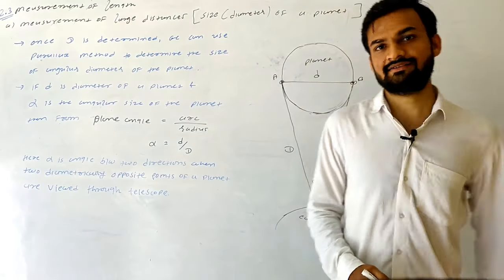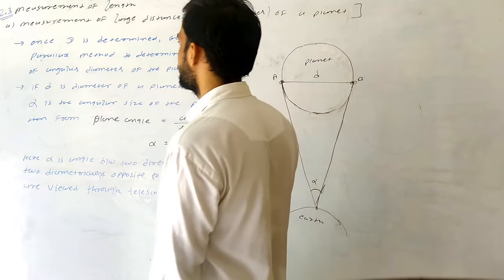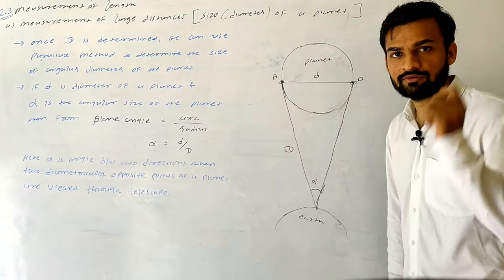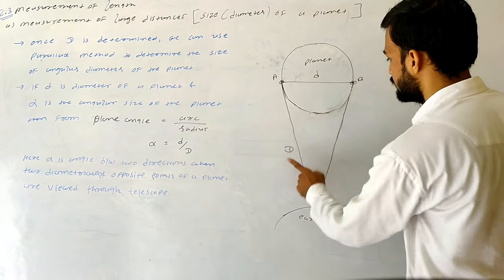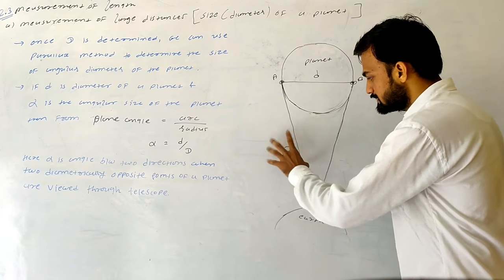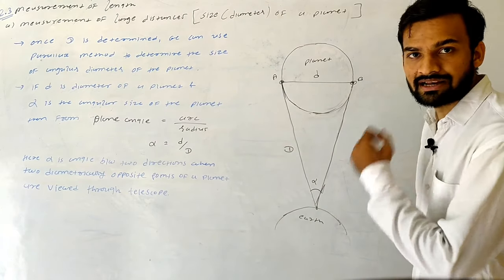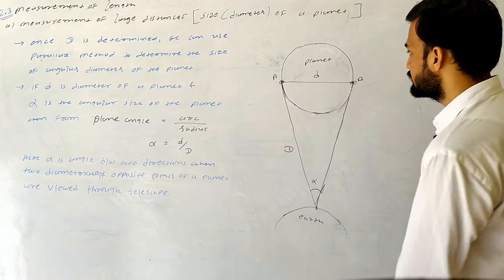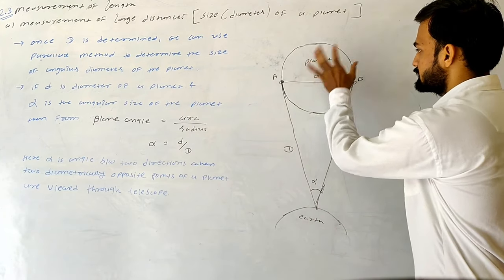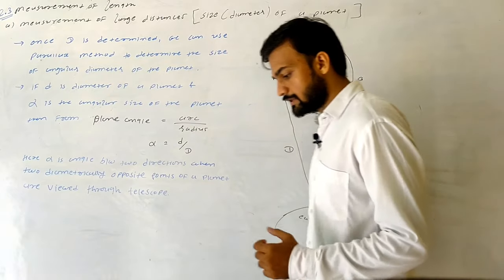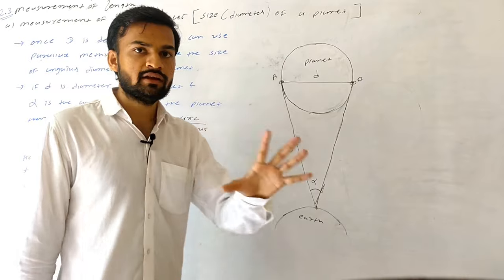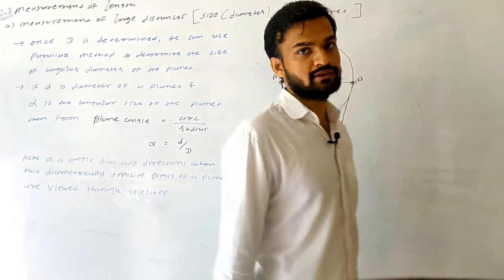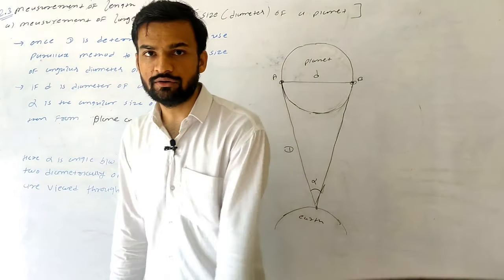Hello students, let's see another use of the parallax method: to determine the size or diameter of a planet. From our previous work, we already know the distance between Earth and the planet, which is capital D. Once D is determined, we can use the parallax method to find the angular size alpha of the planet, and hence its diameter.